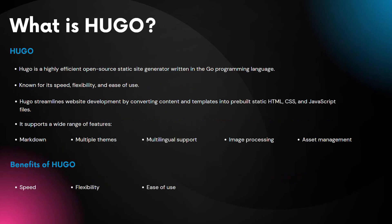Now let's take a closer look at Hugo. Hugo is a static site generator written in the Go programming language. It is one of the most popular static site generators and is known for its speed, flexibility and ease of use. A static site generator is a tool that takes your content and templates and converts them into static HTML pages.